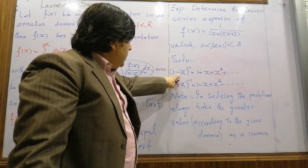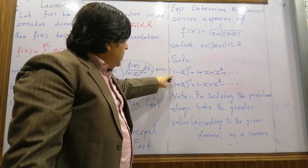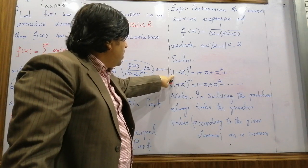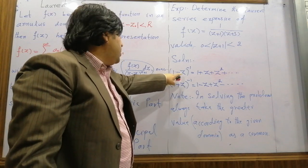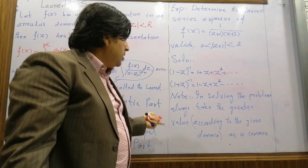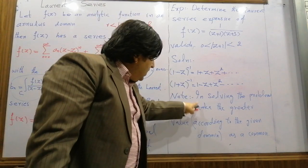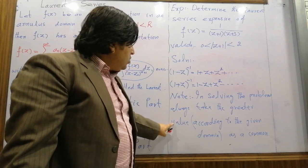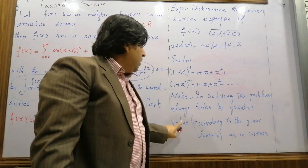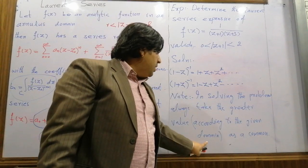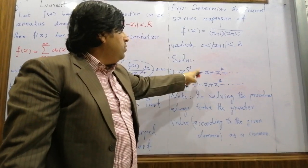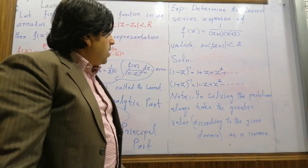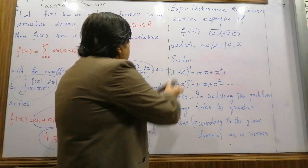To find this series, you can see that the first term is 1. So making the first term as 1, you must take something common so that one term becomes 1. Always take the greater value as common according to the given domain, and then you can use these expansions to solve the problem.